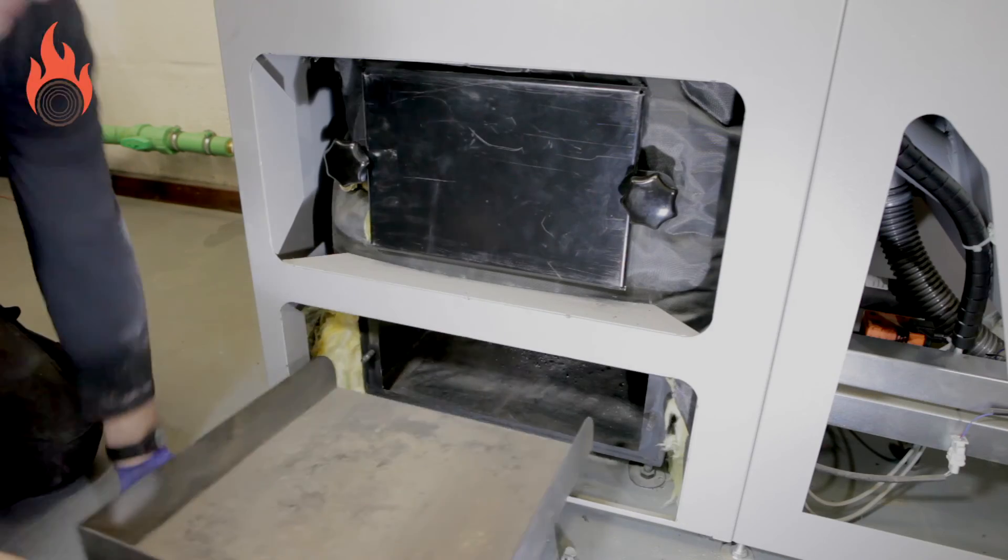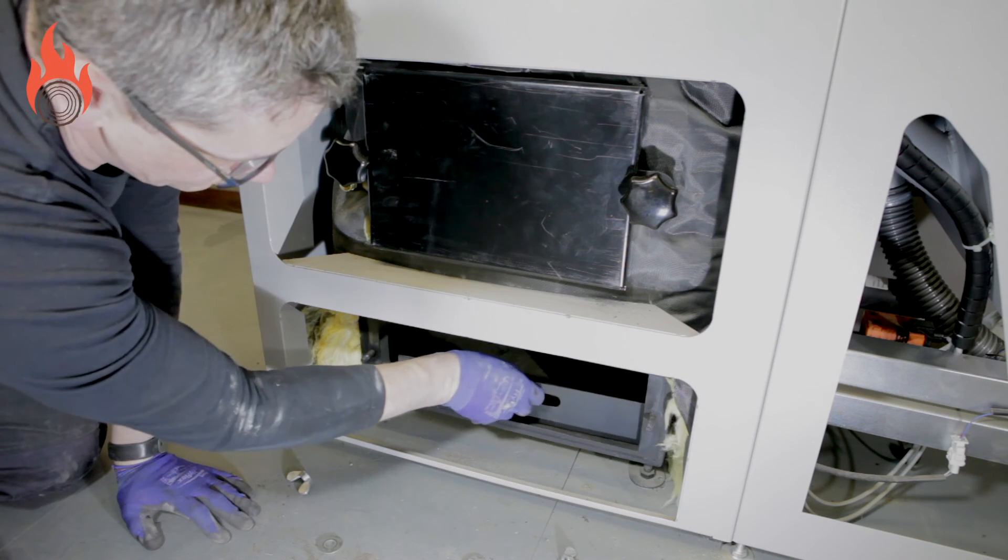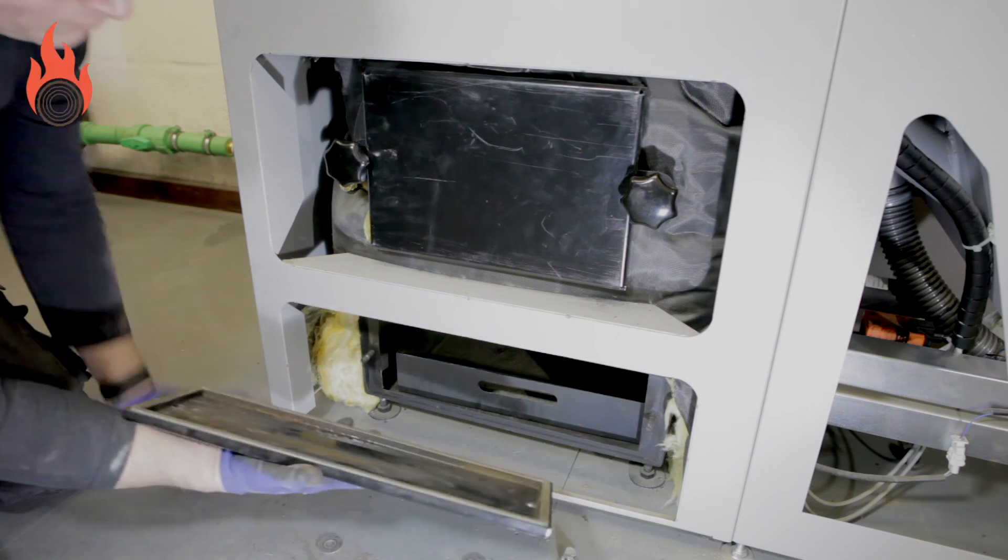Now put the ash drawer back into its original position and reset the ash counter on the boiler screen. Now that the boiler has been cleaned, you can dispose of any removed ash and restart the heating system.